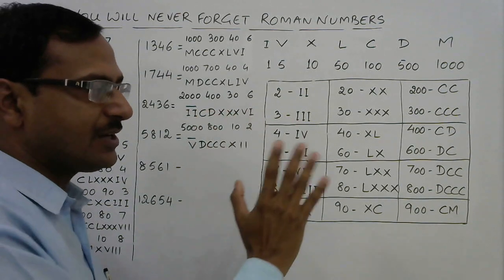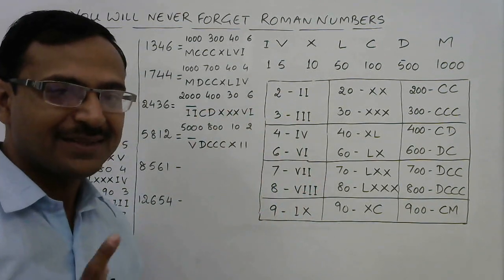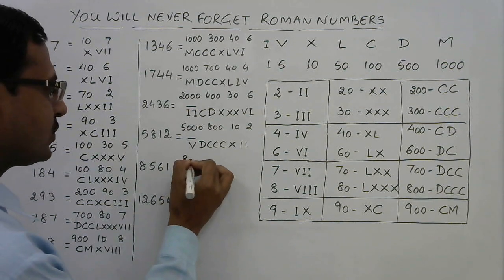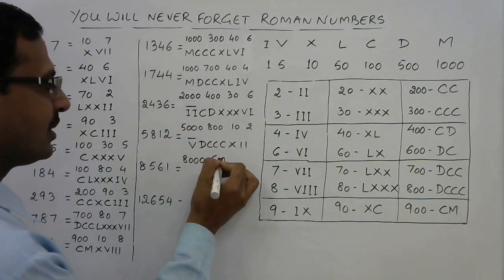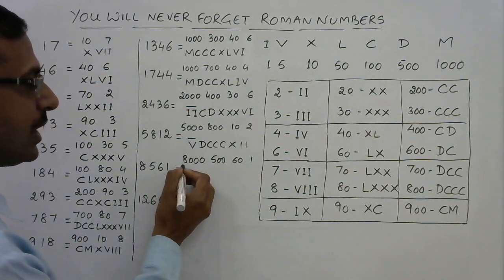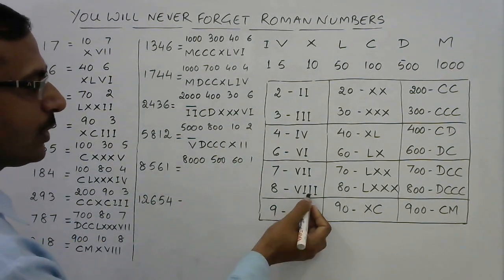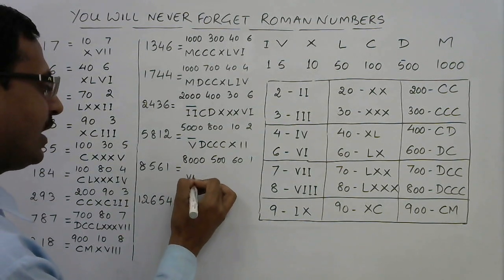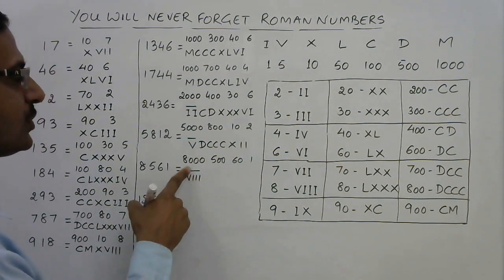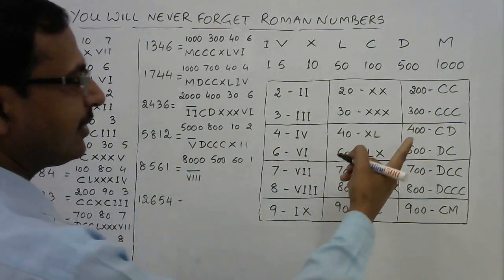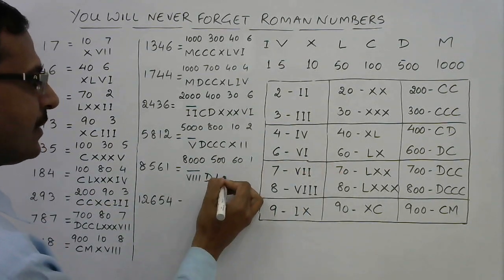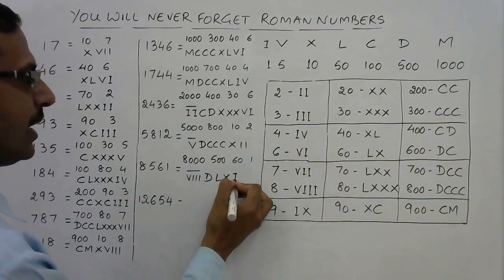For 8561: 8000 is VIII with a bar (VII̅I), 500 is D, 60 is LX, and 1 is I — giving VIII̅DLXI.